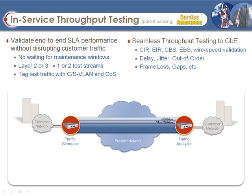In today's interactive session from our lab, we're going to be demonstrating in-service throughput testing. This was introduced in our last firmware update and is an extremely powerful feature designed to allow you to validate the capacity of a link between any two sites without interrupting the actual customer traffic flowing between those points.